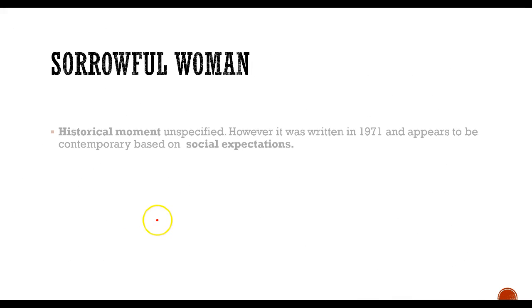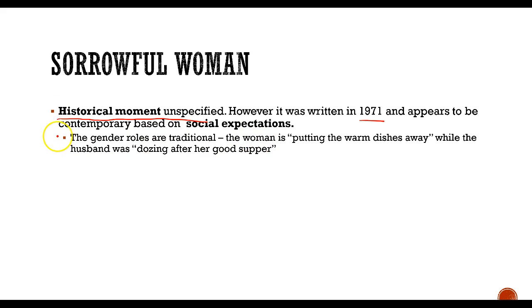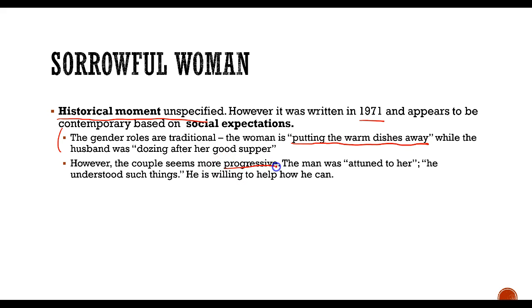Let's take a quick look at Sorrowful Woman, too. In Sorrowful Woman, the historical moment isn't really specified. However, it was written in 1971. And it appears to be contemporary based on the way the characters act, the social expectations of the characters. At the beginning of the story, the gender roles are traditional. The woman is putting away the warm dishes. It seems like she's responsible for the domestic activity. And the husband is dozing after her good supper. It seems like he probably doesn't help that much. So their relationship seems somewhat like Mr. and Mrs. Mallard's. But it does seem more progressive, too. Especially the husband. When the woman stops doing her domestic responsibilities and locks herself away, he's attuned to her. And he says he understood such things. He's willing to help in any way he can. And we never see the man complaining. He just sort of picks up where she left off, taking care of the son and taking care of the house.